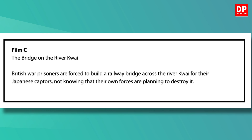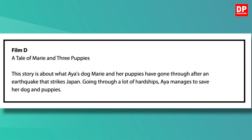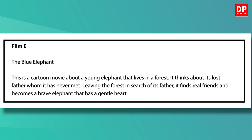Film C: The Bridge on the River Kwai. British war prisoners are forced to build a railway bridge across the River Kwai for their Japanese captors, not knowing that their own forces are planning to destroy it. Film D: A Tale of Marie and Three Puppies. This story is about Aya's dog — Marie and her puppies have gone through an earthquake that strikes Japan. Going through a lot of hardships, Aya manages to save her dog and puppies. Film E: The Blue Elephant. This is a cartoon movie about a young elephant that lives in a forest. It thinks about its lost father whom it has never met. Leaving the forest in search of its father, it finds real friends and becomes a brave elephant with a gentle heart.